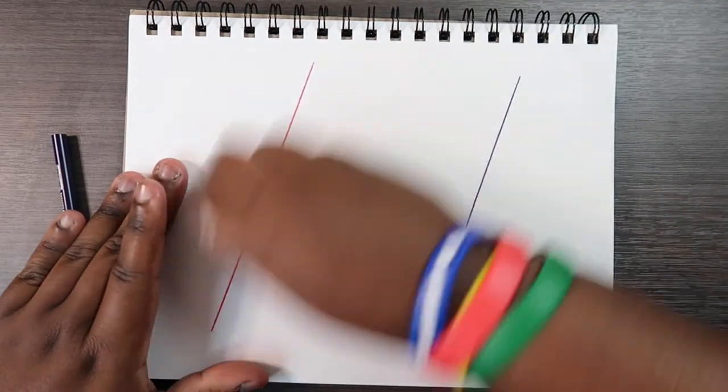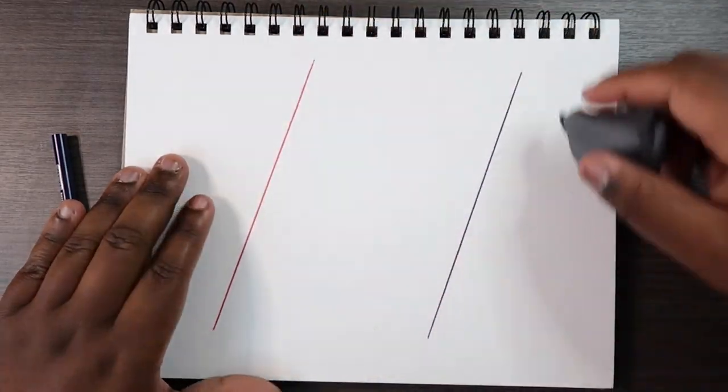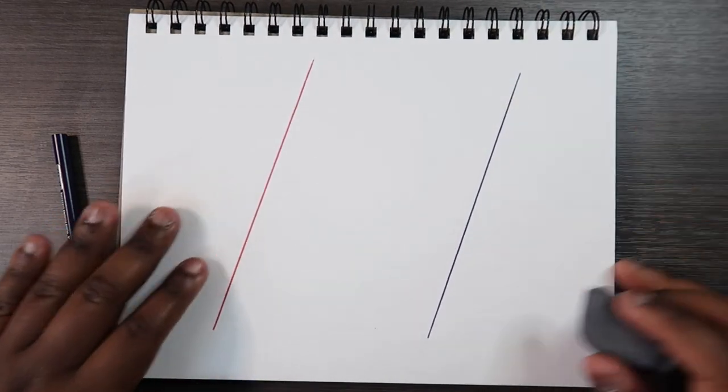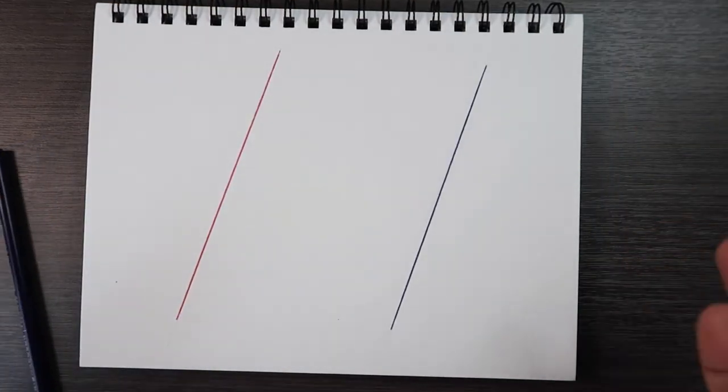Okay and then if you want you can take an eraser and just erase any pencil lines that you may have left behind because the pencil lines will get in the way. Now that that's done there's still something we got to do before we get to the markers.